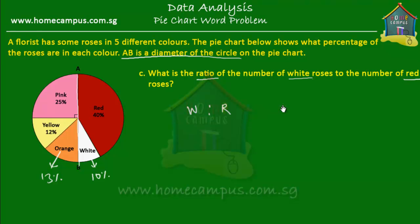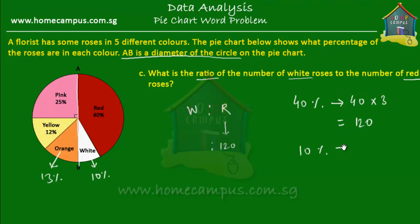The red roses are 40% of all roses. We know that 1% is equal to 3 roses from the previous question. So 40% of all the roses will be equal to 120 — the red roses are 120 in number. The white roses are 10% of all the roses, so that would be 10 times 3, which equals 30. So the white roses are 30 in number. The ratio of the number of white roses to the number of red roses is 30 to 120.